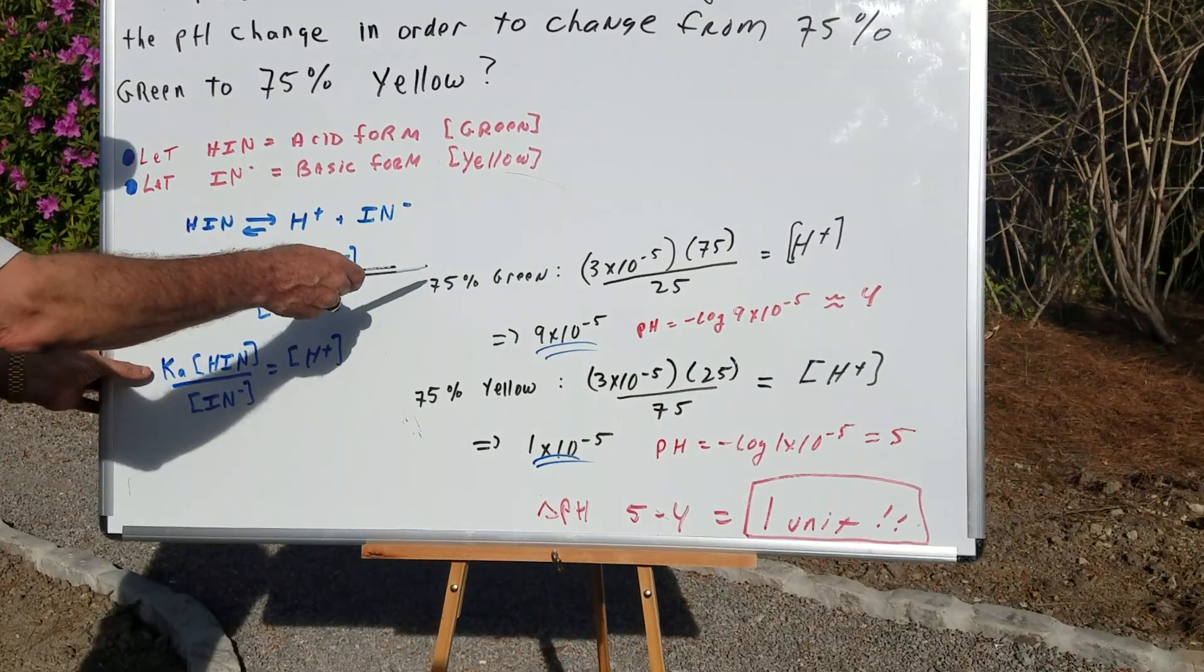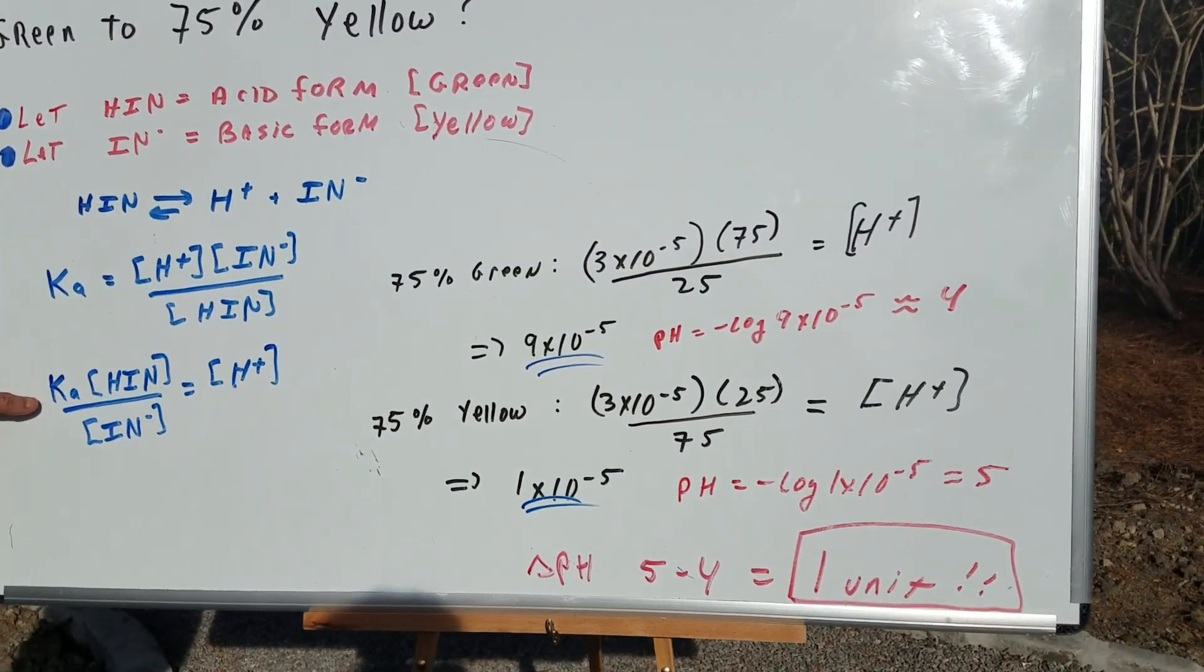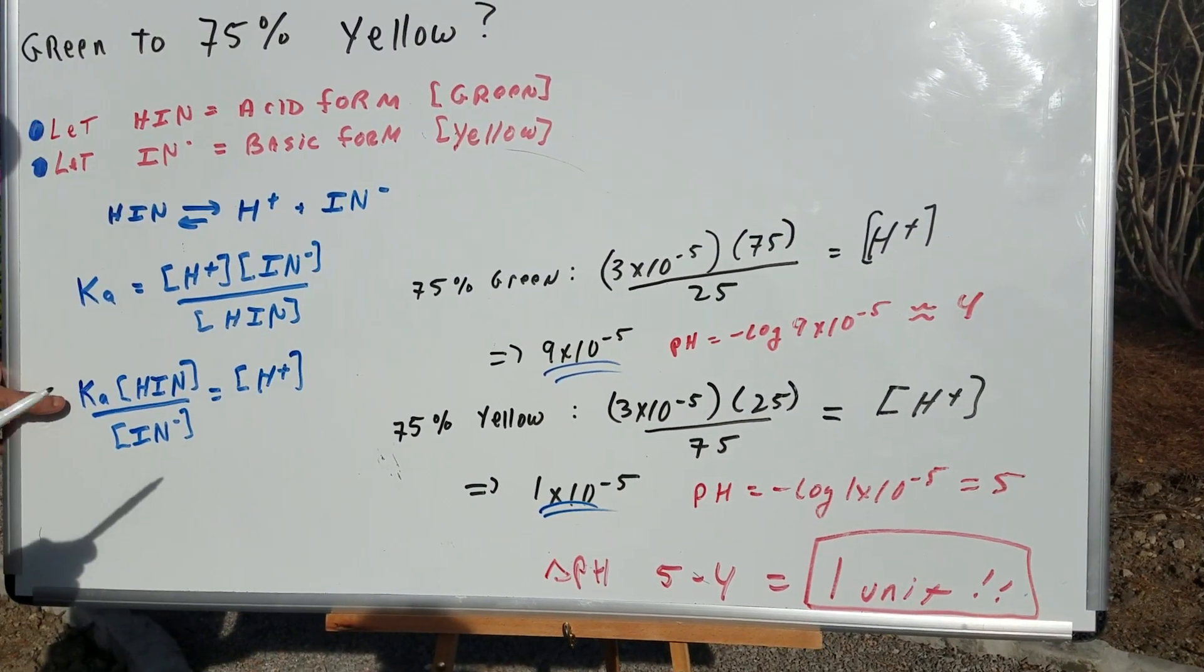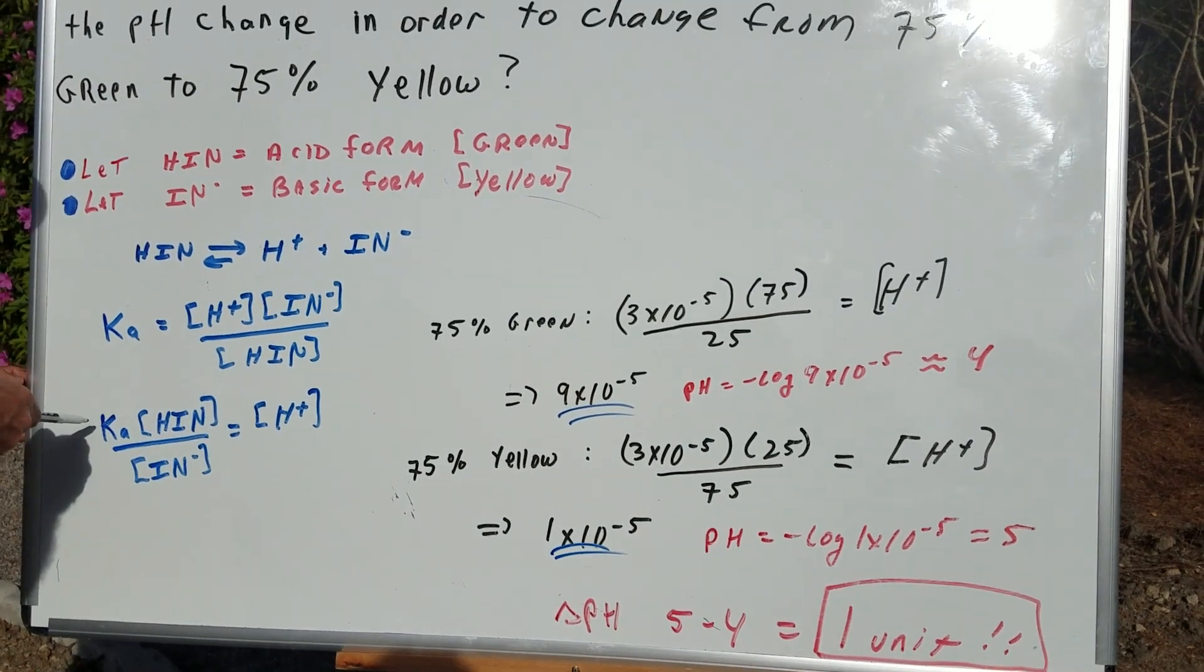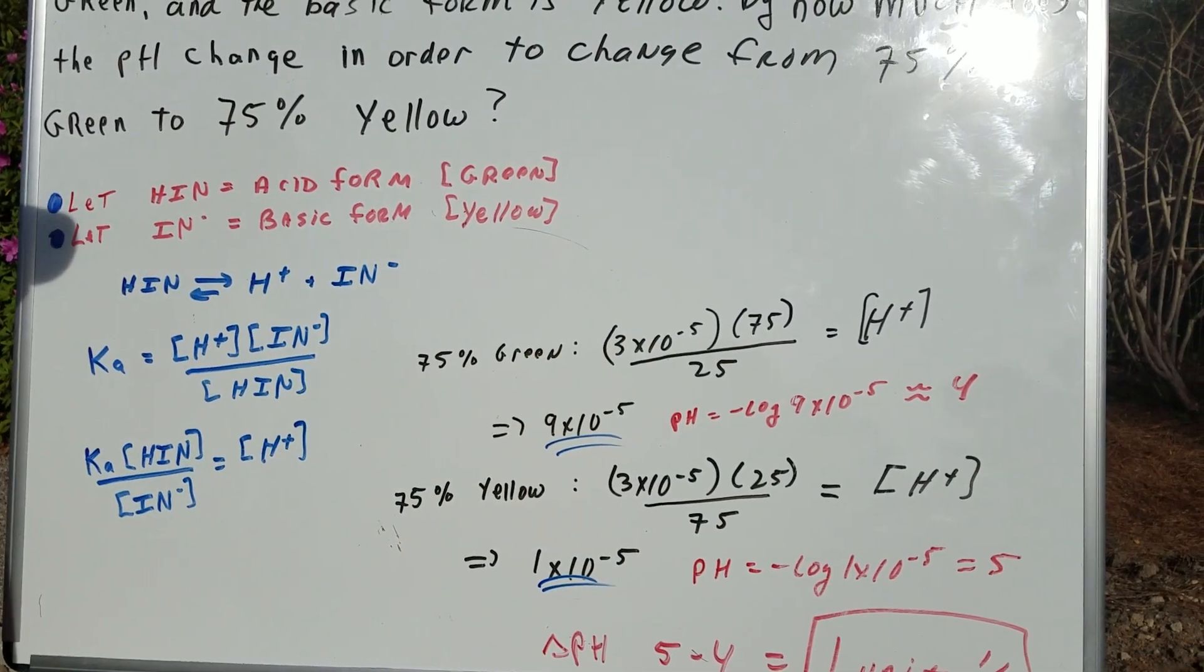All I'm going to do is plug in. Let's first go for 75% green. Remember, green is the HIN form. So we have the Ka, which is 3×10⁻⁵.